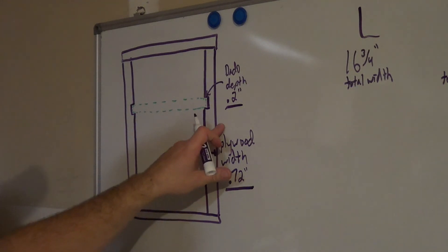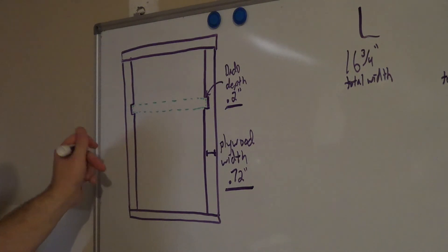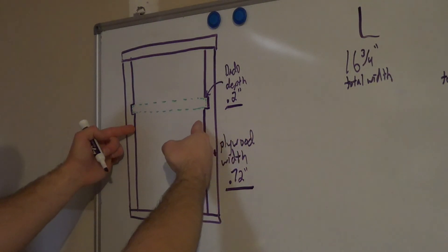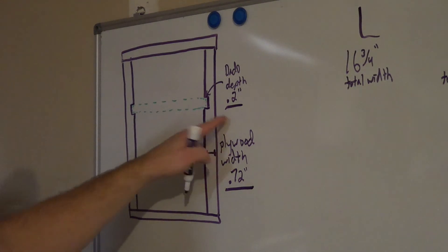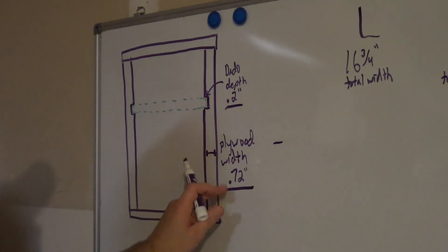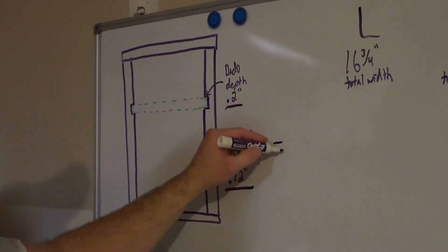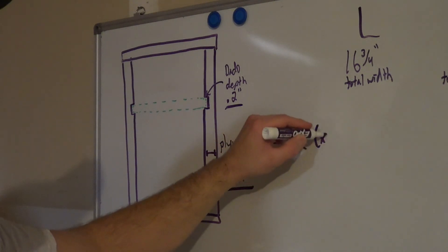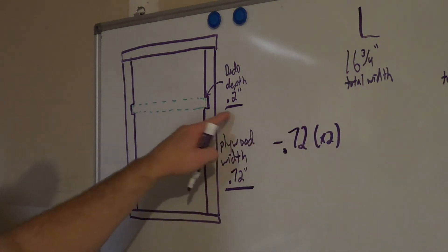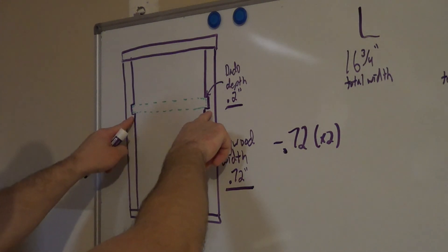Total width of the first chunk is 16 and three-quarters from the outside all the way to the outside. So, what I need to do is I need to subtract those two thicknesses of the plywood on both sides and then also add that 0.2 of an inch back in order to get my final width of that divider. If I'm going to subtract the width of the plywood, I've got two pieces of plywood, so I'm going to subtract 0.72 twice.